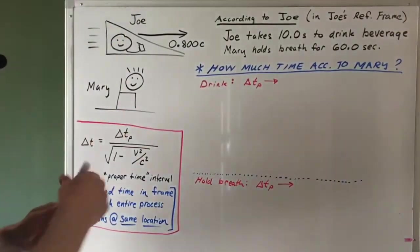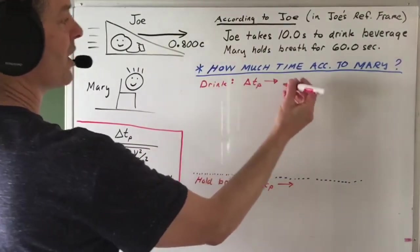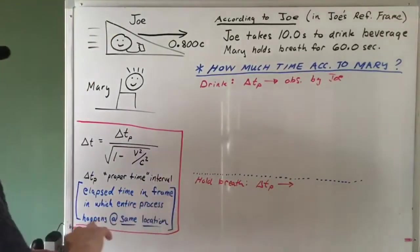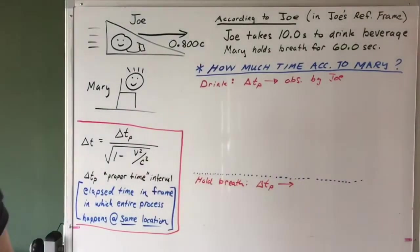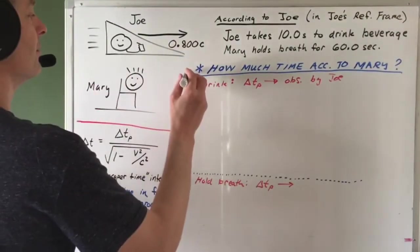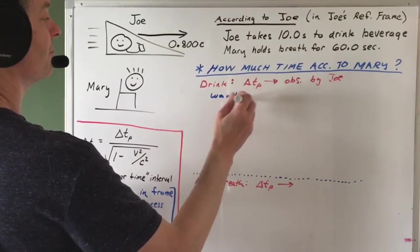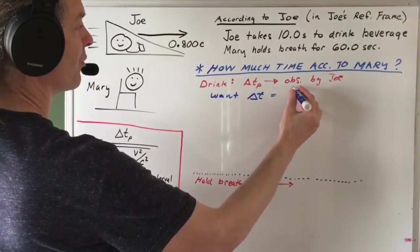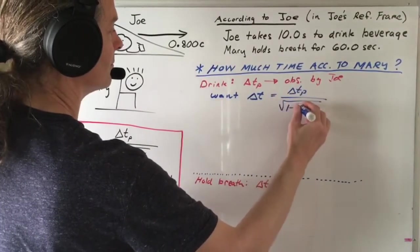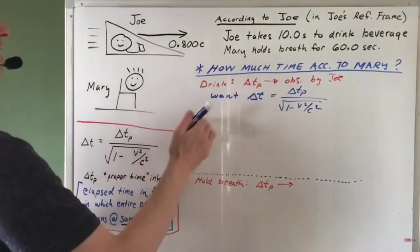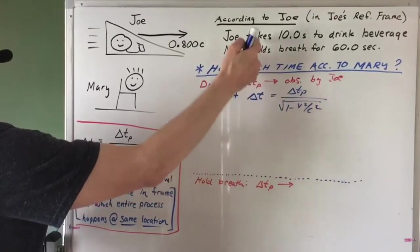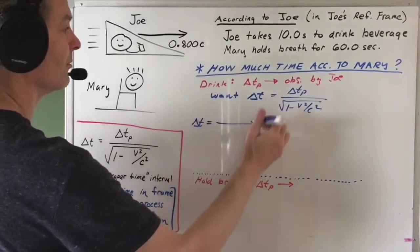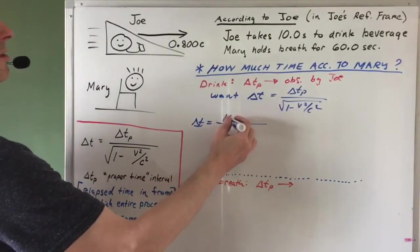The proper time interval for the drinking process is observed by Joe. We want to know how long the drinking process takes according to Mary — that means we want the other time, delta T. So we'll plug into the time dilation formula. Delta T is what we want. Delta T sub P we know — that's the time according to Joe that it takes Joe to drink the beverage. So for delta T sub P we're going to put in 10 seconds.